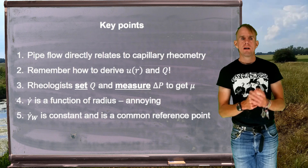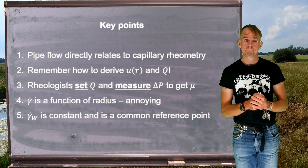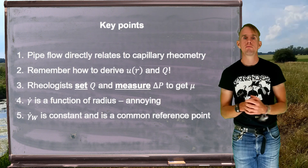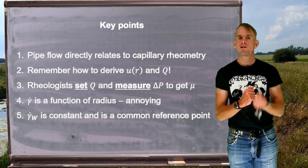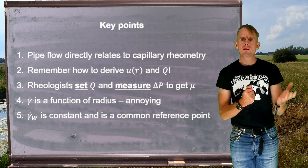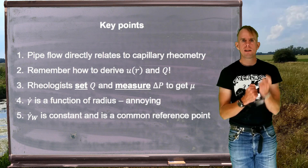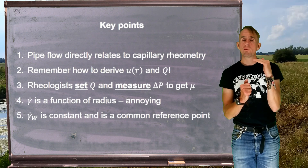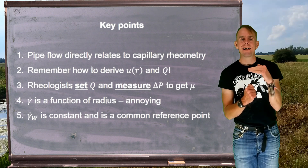To summarize the key points: we look at pipe flow because it relates directly to capillary rheometry, which we'll cover in lecture 4. We need to remember how to derive the velocity field u(r) and volumetric flow rate Q — that's what we've principally recapped here. We write the final expression for viscosity in the form where rheologists set Q and measure Δp to get μ. Shear stress τ and shear rate γ̇ both vary with radius, which is inconvenient when describing an experiment at a specific shear rate. So we reference the tube or capillary wall as our datum, and have derived expressions for both shear stress and shear rate at that reference point.